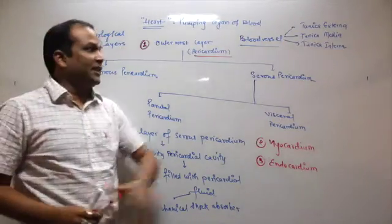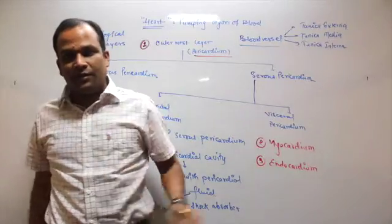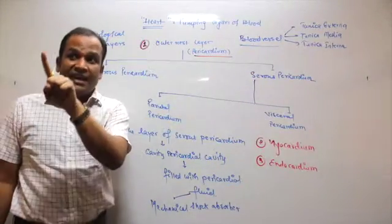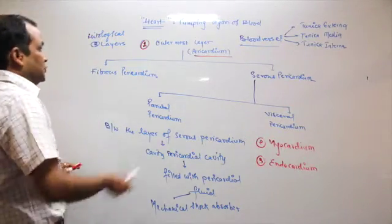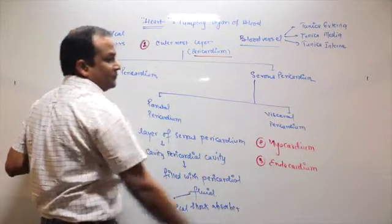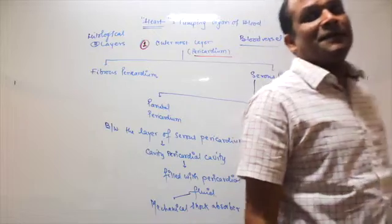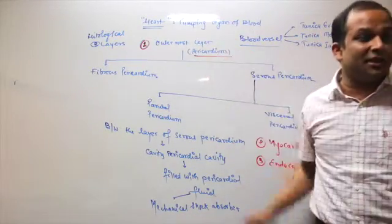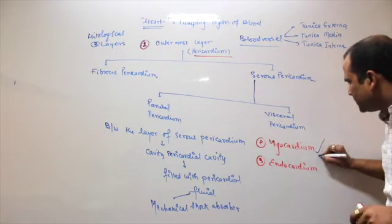Overall, both the heart and blood vessels histologically have three layers. The GIT, in comparison, has four histological layers. Out of these three layers in the heart, which one is the thickest? Myocardium is the thickest.